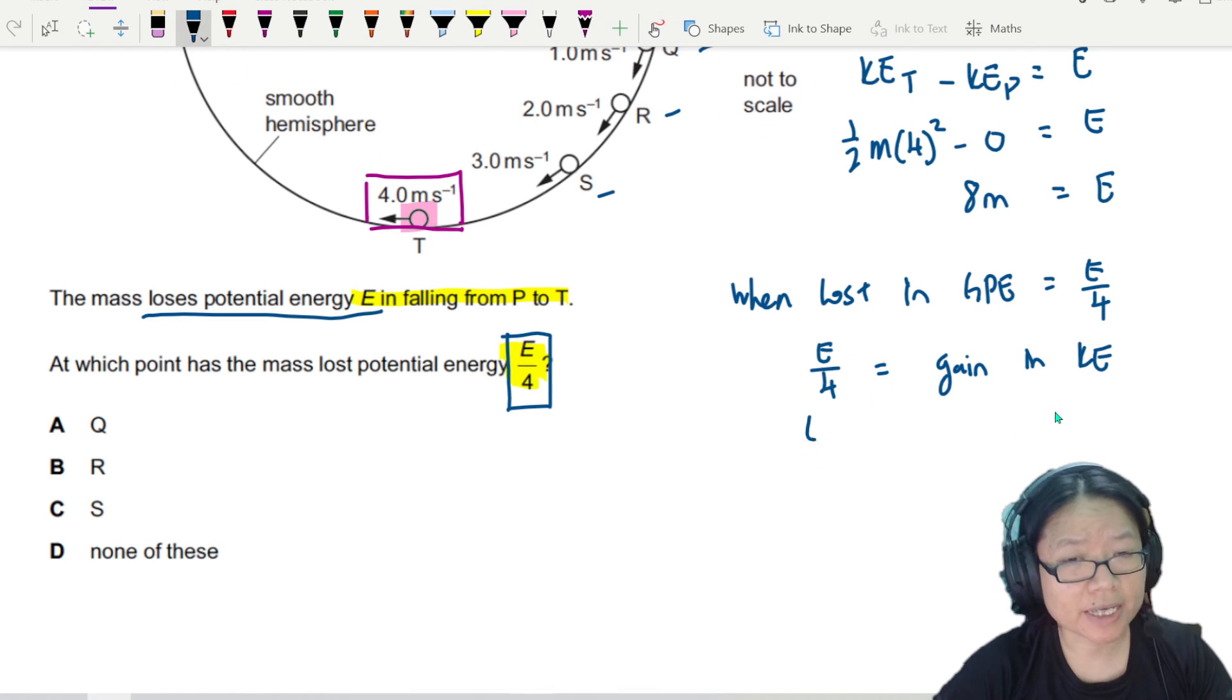How much is the gain in KE? Well, I can then put half mv squared here. And I want to find this new velocity. Let's say I call this V2 squared.